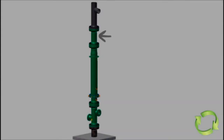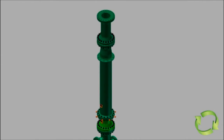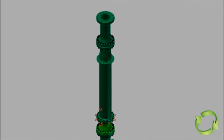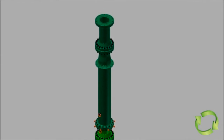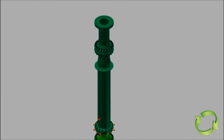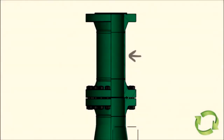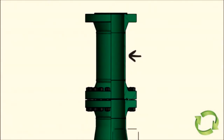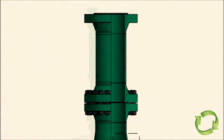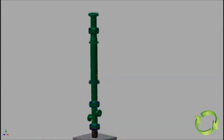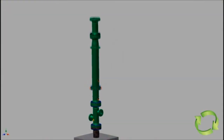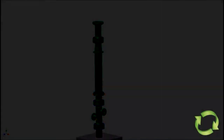Spacer spools are installed to accommodate rigs with a kelly bushing height greater than the TC Tool's combined extended length, typically used where KB lengths are greater than 17 feet. Spacer spools can be fabricated in lengths of 3 feet or longer to accommodate all KB lengths longer than 17 feet.